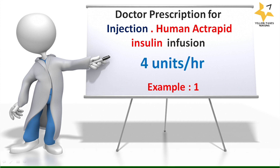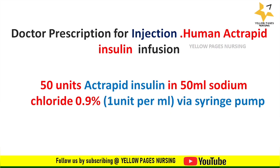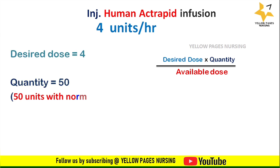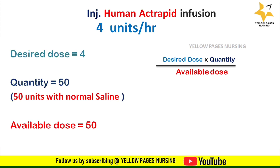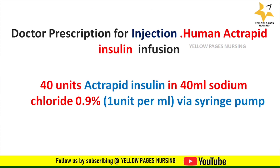For the first example — injection human actrapid insulin infusion at 4 units per hour — 50 units of actrapid insulin is diluted in 50 ml sodium chloride 0.9%, giving 1 unit per ml via syringe pump. The desired dose is 4, quantity is 50, available dose is 50. Applying the formula gives 4 ml per hour.